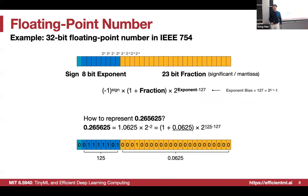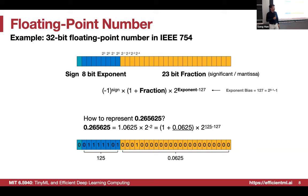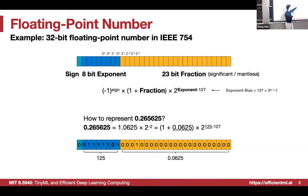Now let's jump into the interesting part: the floating point number. FP32 has three parts: a sign bit (1 bit), 8 bits of exponent, and 23 bits of fraction — also called significand or mantissa. Together, 23 plus 8 plus 1 equals 32 bits. The sign bit is minus 1 to the power of the sign bit, so if it's 1, the number is negative.